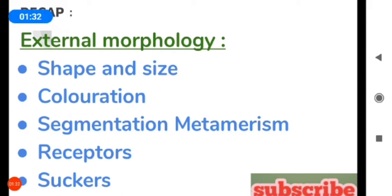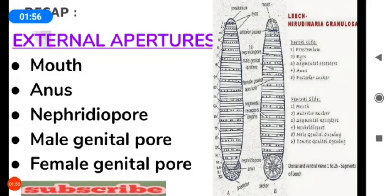Metamerism means each and every segment comprises well-developed organs. There are annular receptors and segmental receptors present in the leech. It has two suckers — anteriorly and posteriorly. The body of the leech has five external apertures: mouth, anus, nephridiopore, male genital pore, and female genital pore.